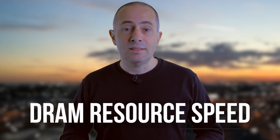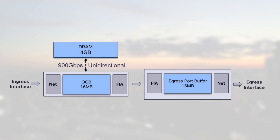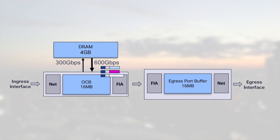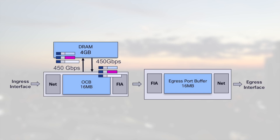Depending on queue utilization, we can have packets stored in OCB or DRAM in ingress. In this generation of products, the link between the NPU and the DRAM is 900 Gbps unidirectional. That means we can write to DRAM at 700 Gbps and read at 200 Gbps simultaneously, or read at 600 and write at 300 at the same time. It's designed to handle bursts of traffic. In the worst case, if you maintained a sustained condition of traffic evicted to the DRAM, you will end up with 450 Gbps read and 450 Gbps write. The opponents of such architecture try to present this as a problem, but we will demonstrate in the next video that they are using nonsensical scenarios only valid in a lab, and we will prove it with real numbers from real-life networks.